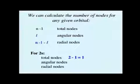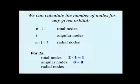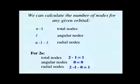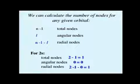Angular nodes, we're not going to have any of those. We'll have zero. l equals zero, so we have zero angular nodes. And in terms of radial nodes, we have two minus one minus zero, so what we have is one radial node.